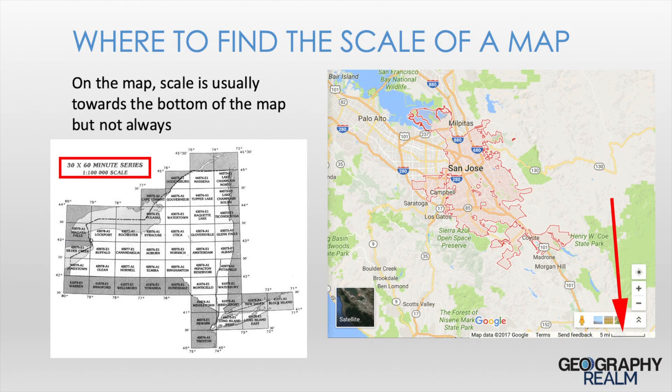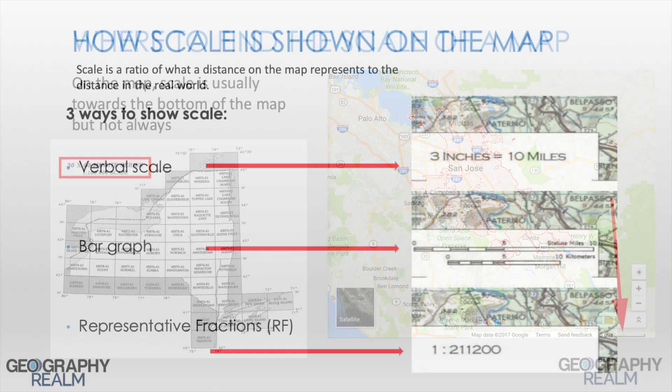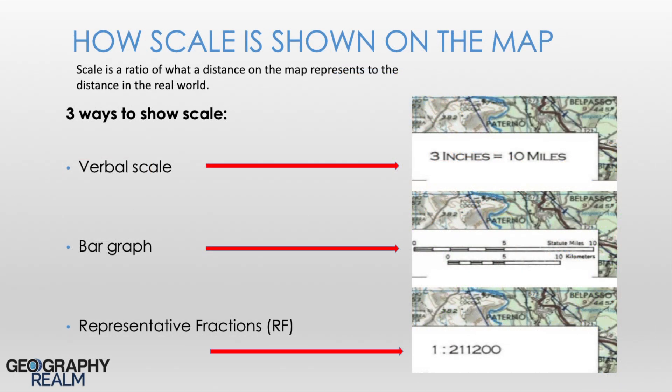One way to understand the scale of a map is to look for the scale representation on the map. Scale is a ratio of what distance on the map represents the distance in the real world. There are three main ways that scale might be shown on a map: a graphic or bar scale, a verbal scale, or a representative fraction.